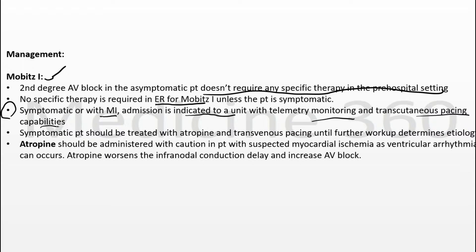Patients with acute MI and second degree block who are symptomatic — specifically those with Mobitz II second degree block — will require transcutaneous pacing or transvenous pacemaker placement. Symptomatic patients should be treated with atropine and transvenous pacing until further workup determines the etiology.